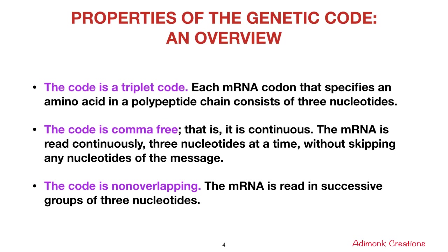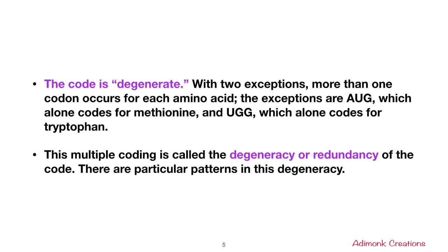Next are the properties of the genetic code. The first property is that the code is a triplet code — each mRNA codon that specifies an amino acid consists of three nucleotides. The second property is that the code is comma-free, meaning it is always continuous without any punctuation; the mRNA is read continuously three nucleotides at a time without skipping any nucleotides. The code is also non-overlapping, meaning the mRNA is read in successive groups of three nucleotides.